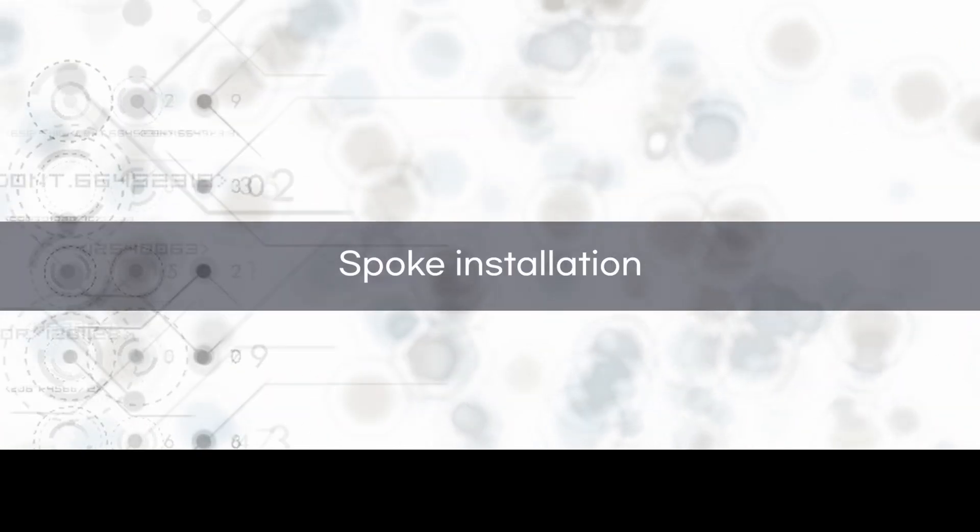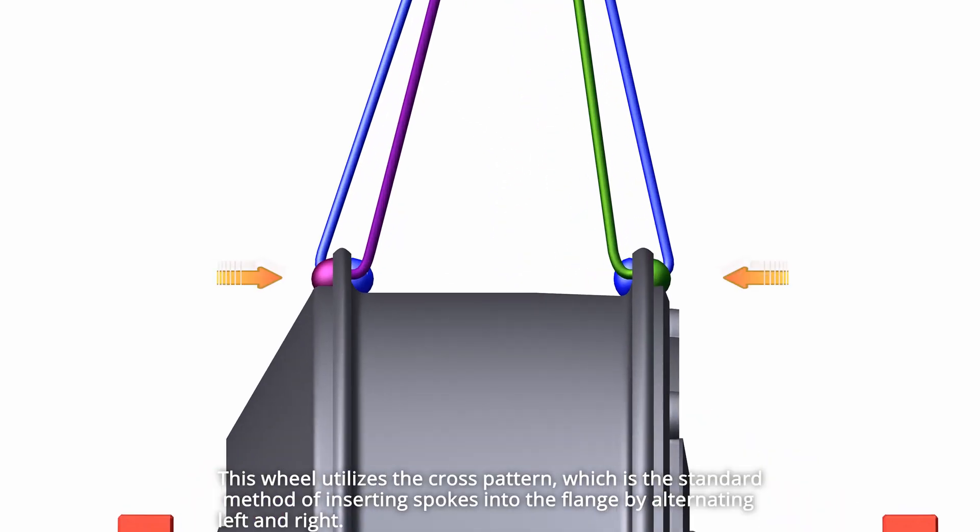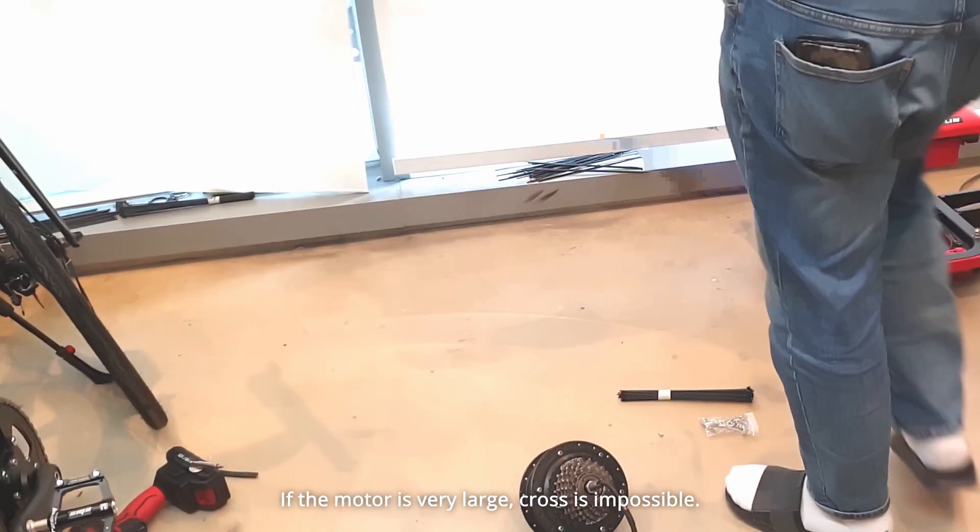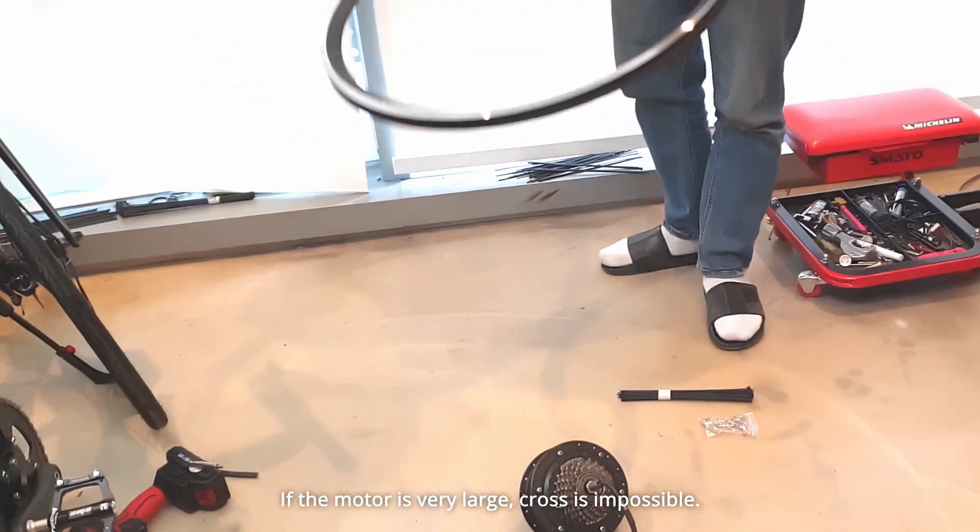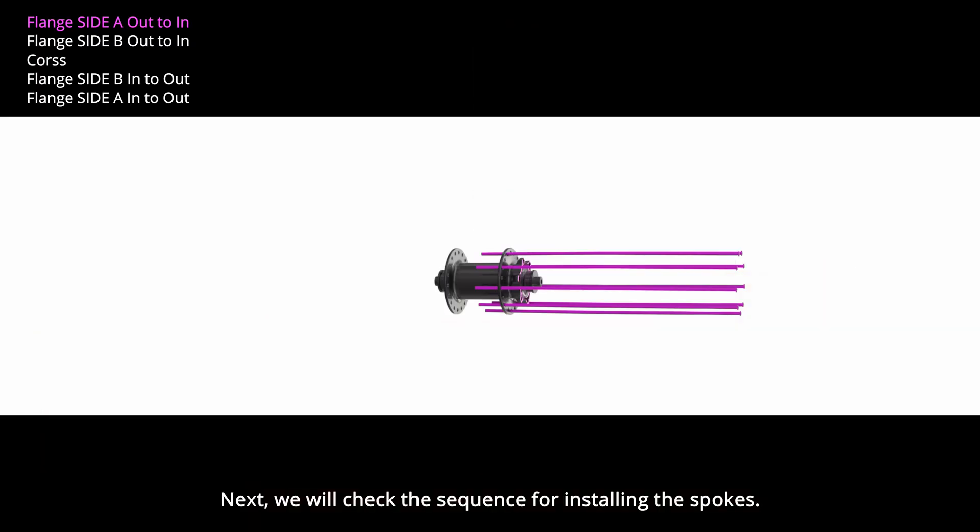Spoke installation. This wheel utilizes the cross pattern, which is the standard method of inserting spokes into the flange by alternating left and right. If the motor is very large, cross is impossible. Next, we will check the sequence for installing the spokes.